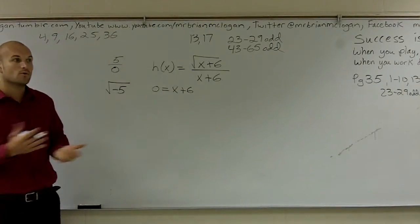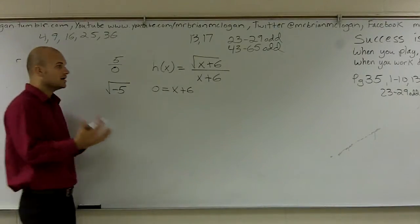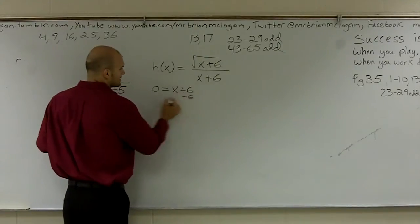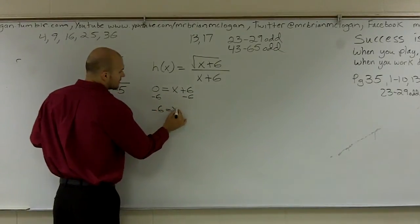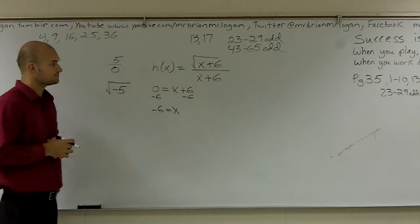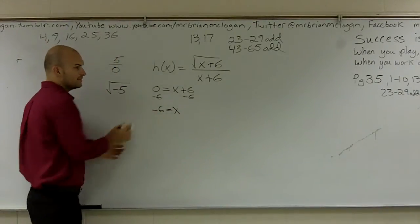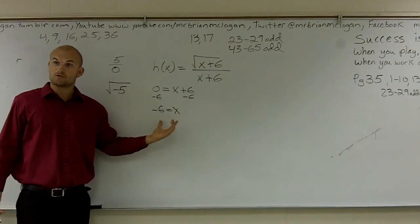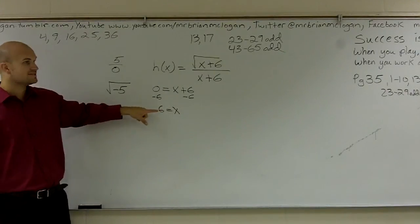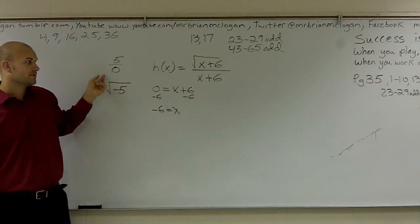So whenever our bottom is going to equal zero, you just take the bottom and set it equal to zero. Because whenever your bottom equals zero, we know that x value cannot exist. So I subtract six on both sides, so I get x equals negative six. Therefore, here's an x value that is not a part of our domain, because when x equals negative six, we're divided by zero.